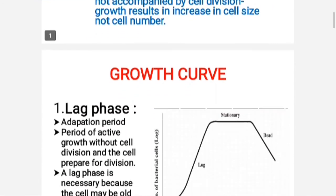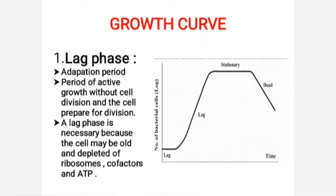Moving to the next term: the growth curve. Population growth is studied by analyzing the growth curve of a microbial culture. When any microorganism is cultivated in liquid medium, they are usually grown in a batch culture or closed system. Batch culture means they are incubated in a closed culture vessel with a single batch of medium. As no fresh medium is provided during incubation, nutrient concentration declines and concentration of waste increases. To represent the growth of microorganisms, we plot a graph of the logarithm of the number of viable cells versus incubation time, and the resulting curve has four distinct phases.